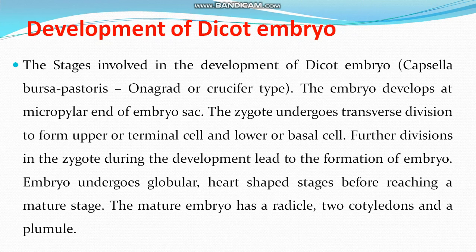We will now discuss the topic known as development of dicot embryo. The stages involved in the development of dicot embryo in Capsella bursa-pastoris: the embryo develops at the micropylar end of the embryo sac. The zygote undergoes transverse division to form an upper terminal cell and a lower basal cell. Further divisions in the zygote during development lead to formation of the embryo.